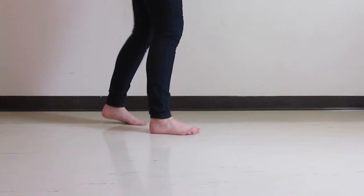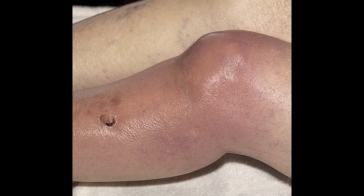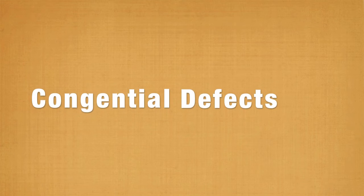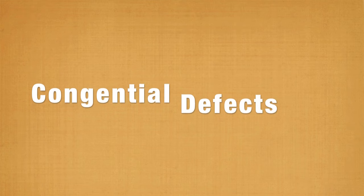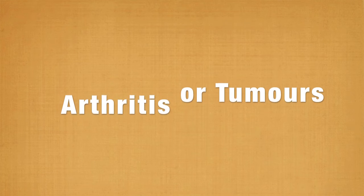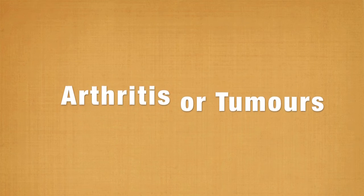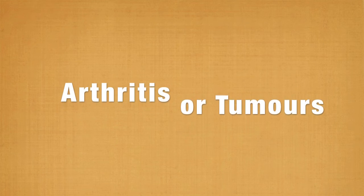Assess this type of gait by observing the stance phase of each leg. The causes of an antalgic gait will vary with age, but some examples include congenital defects, fractures of the tibia or foot, infections such as osteomyelitis or septic arthritis, arthritis in the leg joints, or benign or malignant tumors in the lower limb.